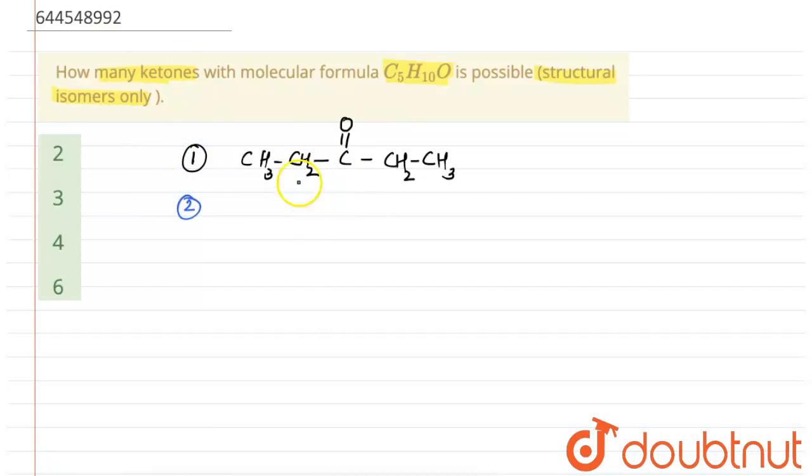We'll just shift this to the other side where we can write it as CH3-C=O-CH2-CH2-CH3. This is the other possible isomer.